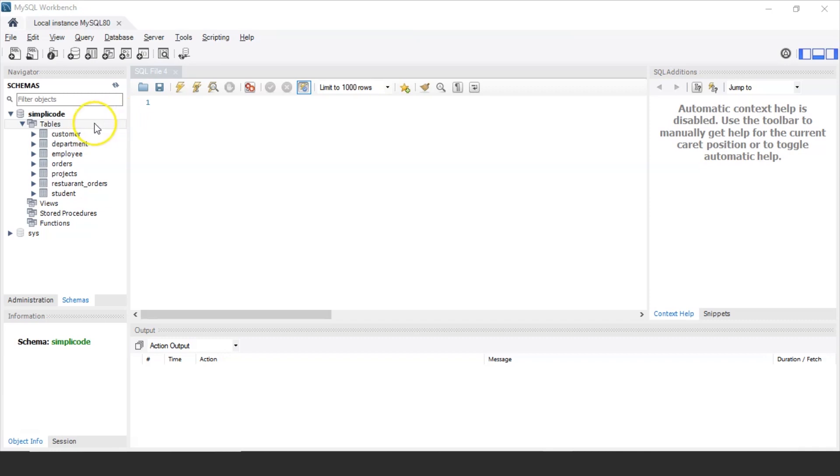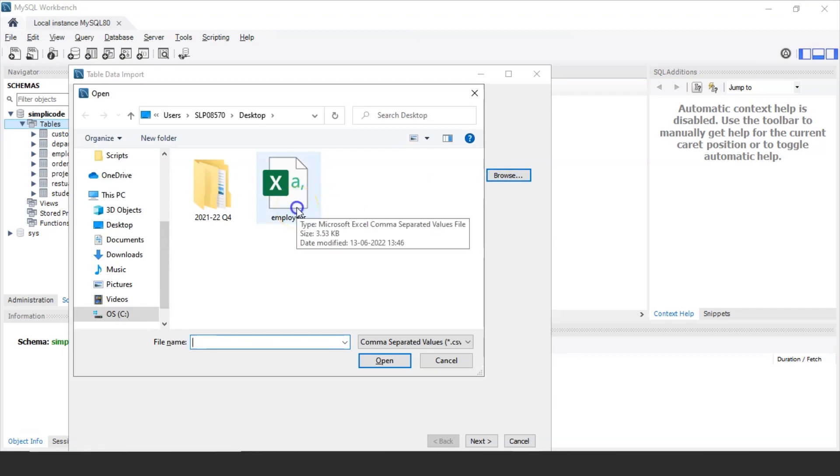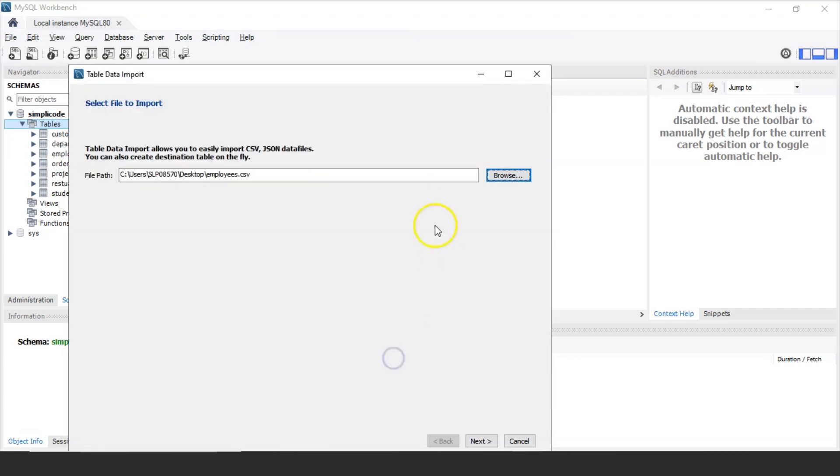For that all you have to do is just go to the tables tab and right click on it and you'll find table data import wizard. Click on that. Now it will ask to import the location from where you have saved. So I have saved my file in desktop. So I'm just selecting the file.